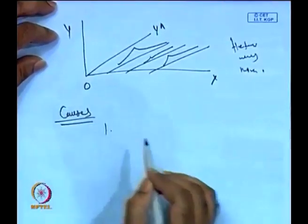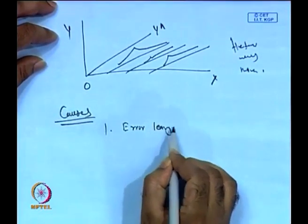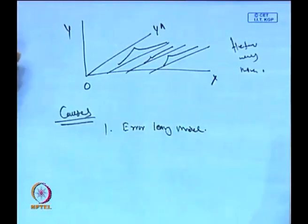Once you know the nature of heteroscedasticity, the next question is: what are the causes behind it? The first cause is a concept called error learning models. As mentioned in the last class, failure is the pillar of success — if you fail, it gives learning lessons useful for the future. Error learning models behave in the same way.